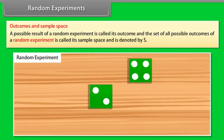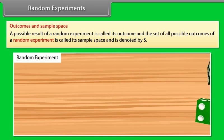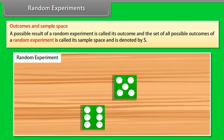Outcomes and sample space. The possible result of a random experiment is called its outcome, and the set of all possible outcomes of a random experiment is called its sample space, denoted by S. As you see in the animation, the outcome of throwing the dice is different in both cases, so these are called random experiments.